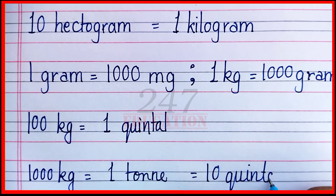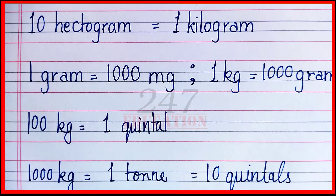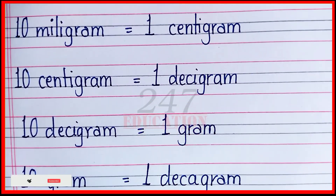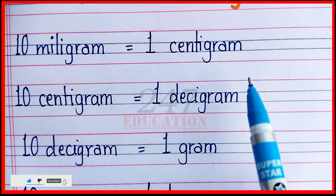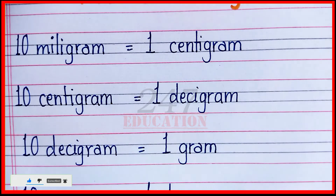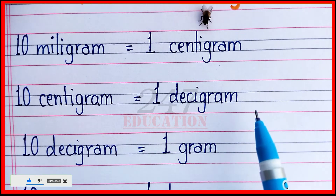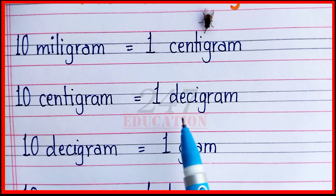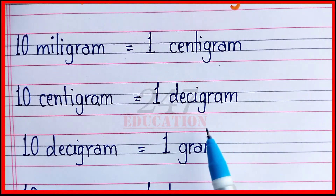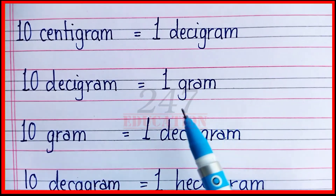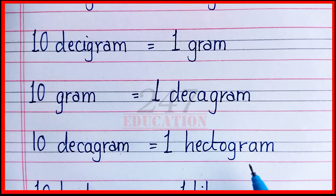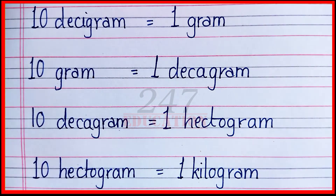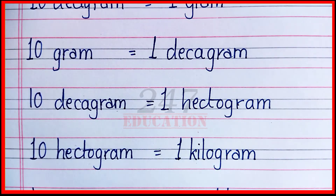Starting to see: 1 milligram equal to 1 centigram. 10 centigram equal to 1 decigram. 10 decigram equal to 1 gram. 10 decigram equal to 1 hectogram.